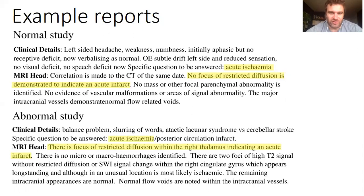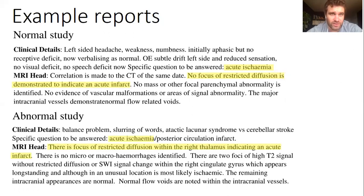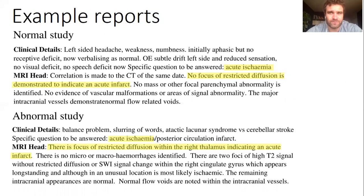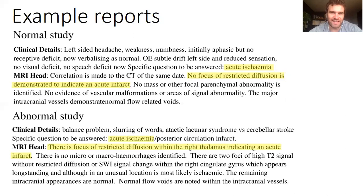You may notice that the language used to describe the presence of an abnormality is very similar to that used to rule it out. For example the top report says 'no focus of restricted diffusion to indicate acute infarct, no mass, no evidence of vascular malformation.' When you compare it to the bottom report, which does describe an abnormal examination — in this case an acute infarct — the similarity of language is very unhelpful for NLP, meaning classical approaches involving n-grams, word frequencies, or even regular expressions are likely to fail.